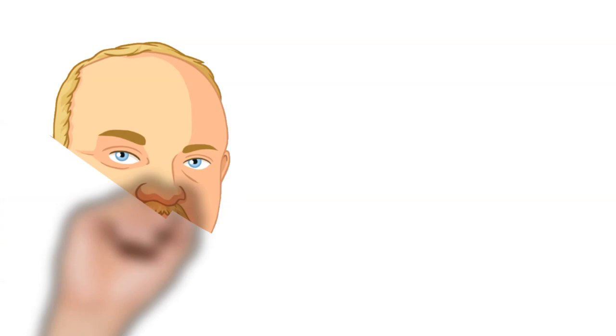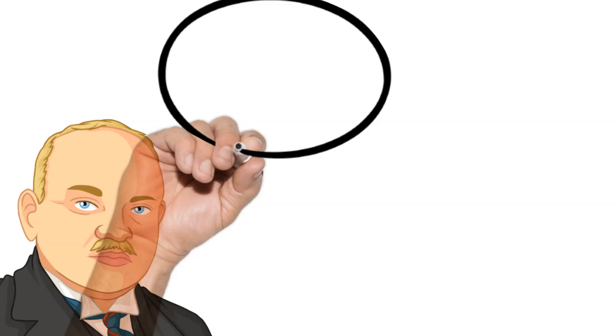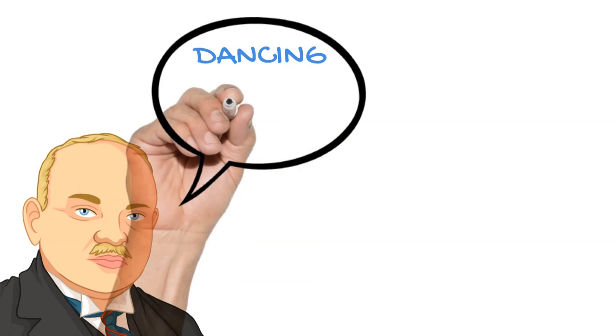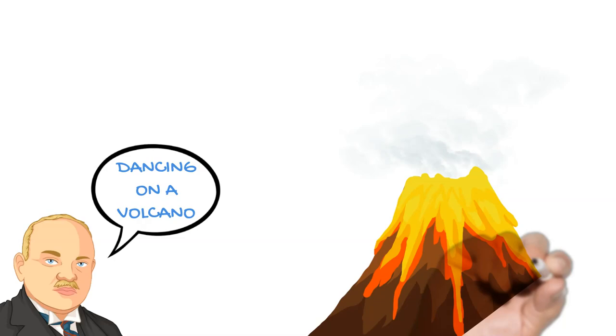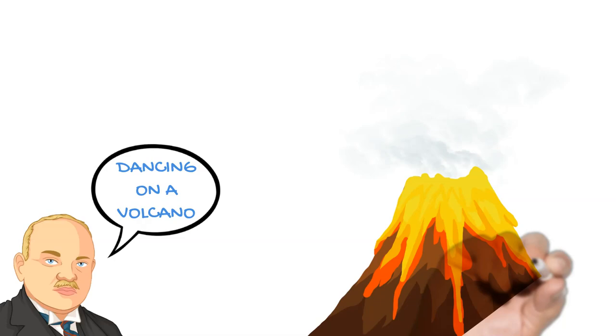All of these actions helped bring a period of relative stability to the fledgling Weimar democracy, but Stresemann himself warned of the fragility of the situation when he said, the German economy is doing well only on the surface. Germany is in fact dancing on a volcano. If the short-term loans are called in by America, most of our economy will collapse. This is precisely what happened in 1929, when the Wall Street Crash triggered a global economic depression.